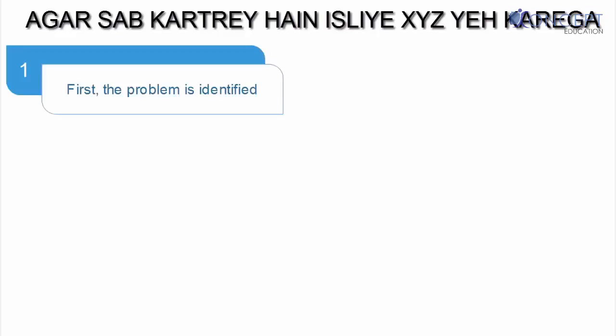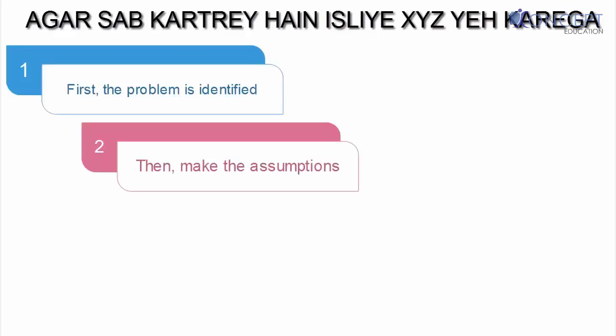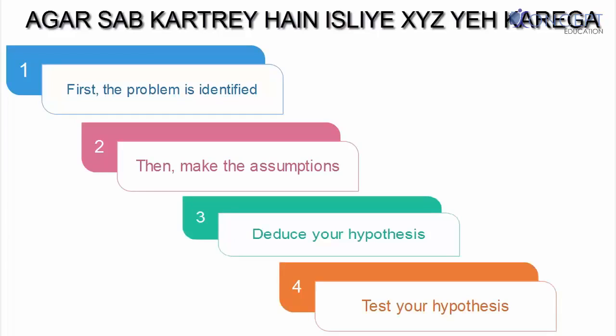Agar sab karte hai, is liye xyz karta hai. That means, generally everyone does it. And that's why you do it too. So basically, the flow in deductive method is, first, the problem is identified, then they make the assumption, then deduce your hypothesis, and then test your hypothesis. And this is how the various theories in economics have been built.